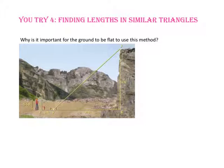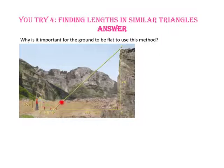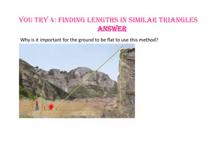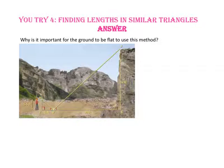Pause the video and try number 4. Why is it important for the ground to be flat to use this method? We know that light reflects off the mirror at the same angle as it hits it, so we have two congruent angles. If the ground is flat, the cliff is perpendicular to the ground making a 90-degree angle, and Michael is standing perpendicular to the ground making a 90-degree angle, giving us angle-angle similarity. If the ground is not flat, the angles would not be congruent and therefore we could not have similar triangles.